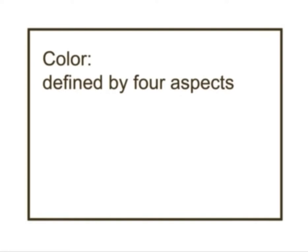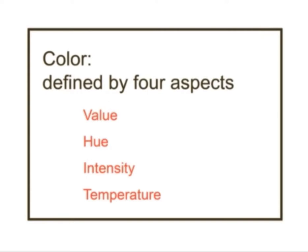Color is defined by four aspects: value, hue, intensity, and temperature. You may have seen the webinar from the past two weeks discussing color, so some of these terms may be familiar. I'm going to give you the general definitions now without going into enormous detail, because we're going to spend a lot of time during the course looking at those four aspects of color.